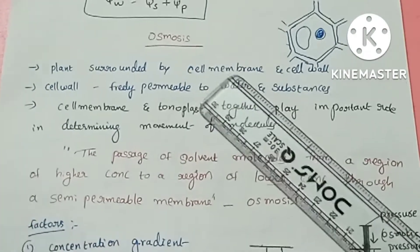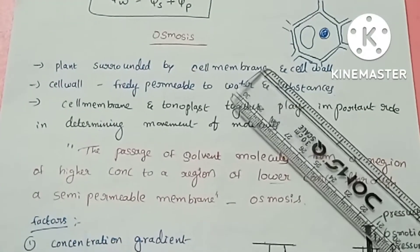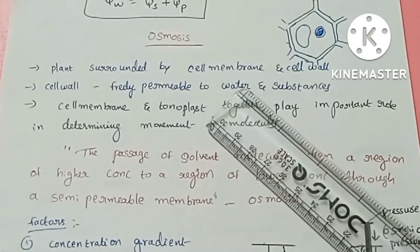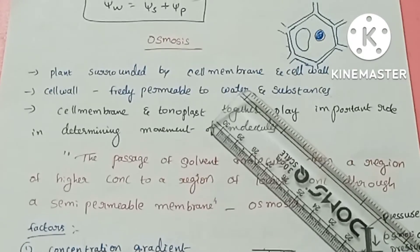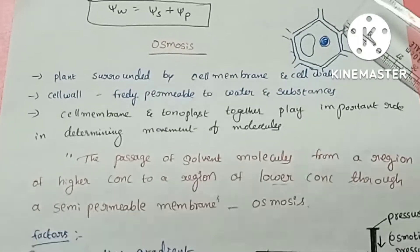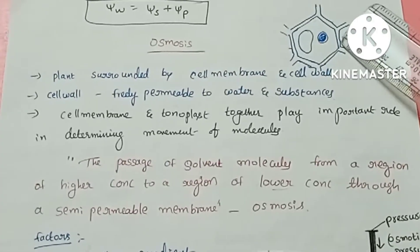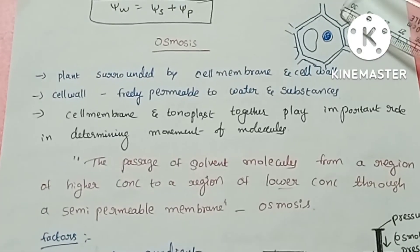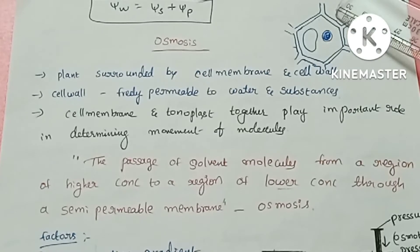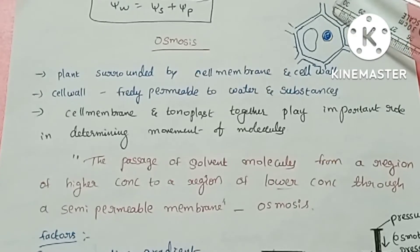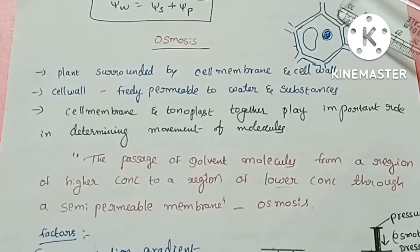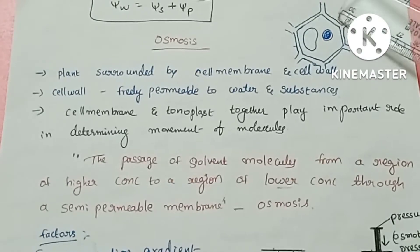The next concept is osmosis. Before going to osmosis, we will look at the plant cell structure. A plant cell has a cell wall and a cell membrane. The cell wall acts as a barrier and boundary.